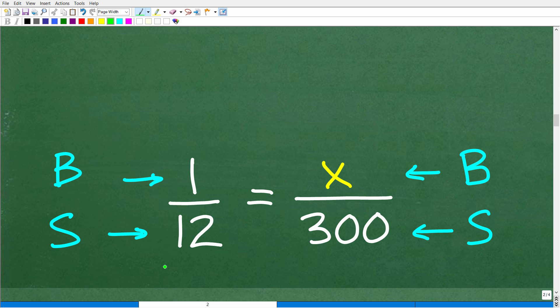Let's set up two equal fractions. Remember, we have this gear ratio. The big gear is going to make one turn for every 12 turns the small gear is making. This is our 1 to 12 gear ratio.